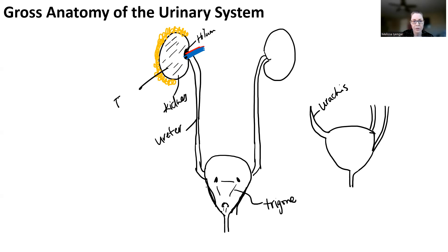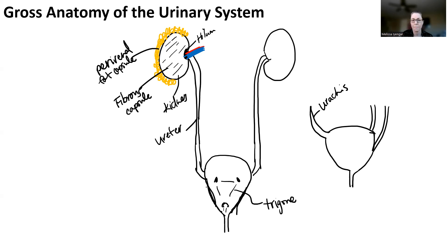So, the kidney is going to have a fibrous capsule that surrounds it. It has a pararenal fat capsule that surrounds it. And then when you cut the kidney on the inside, we're going to look at the structures of the kidney — those are usually the things that are a little bit more difficult.